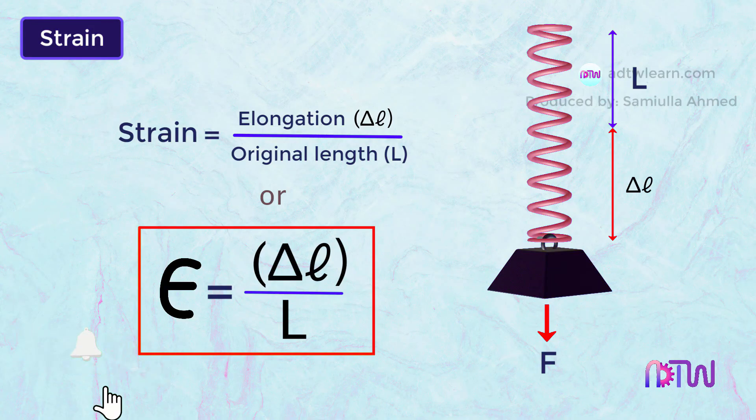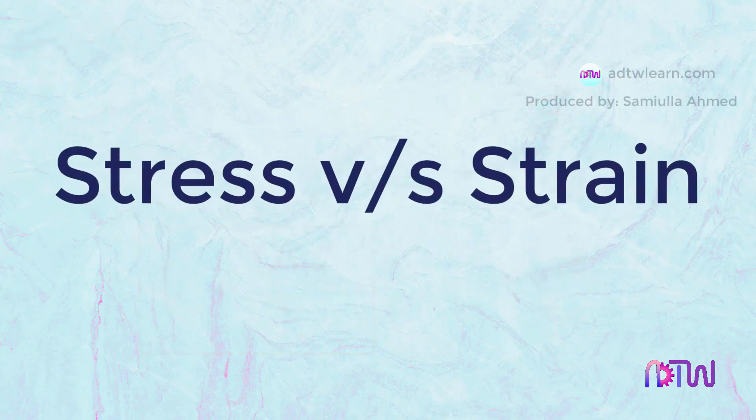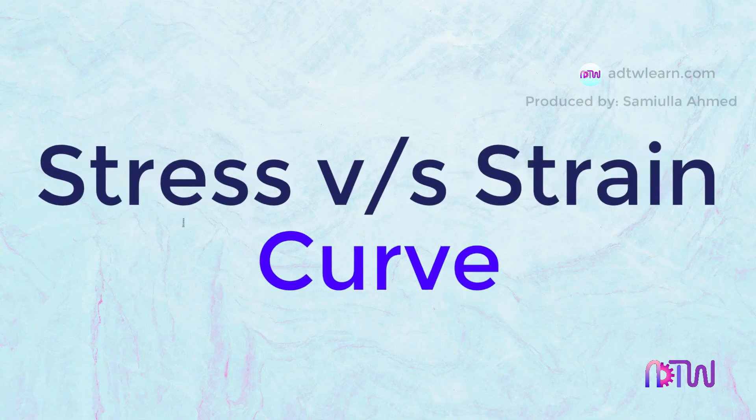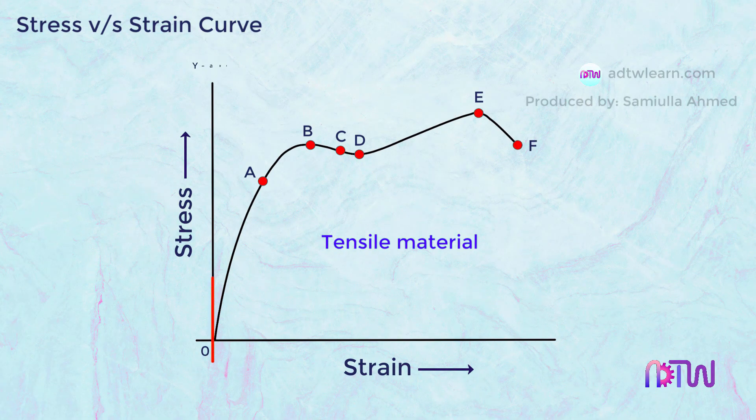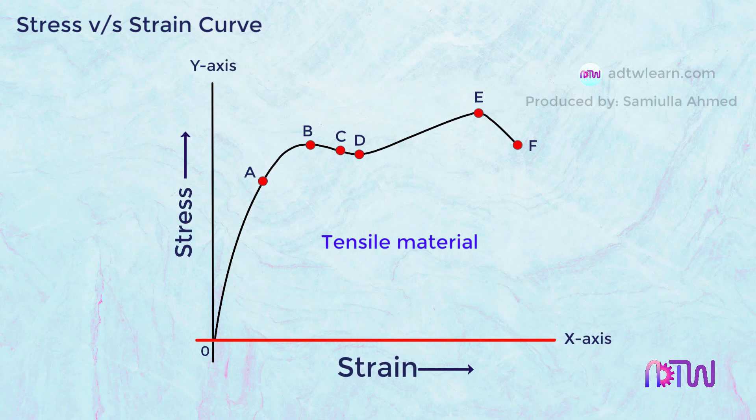As we understood what stress and strain mean and how to calculate them, now we can understand the stress versus strain curve easily. This graph shows the stress versus strain curve for a tensile material. On the y-axis we have plotted stress, and on the x-axis we have strain.